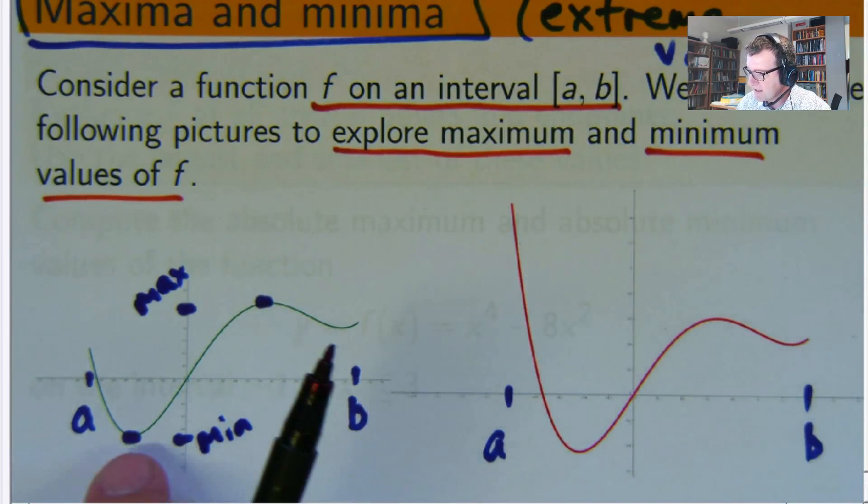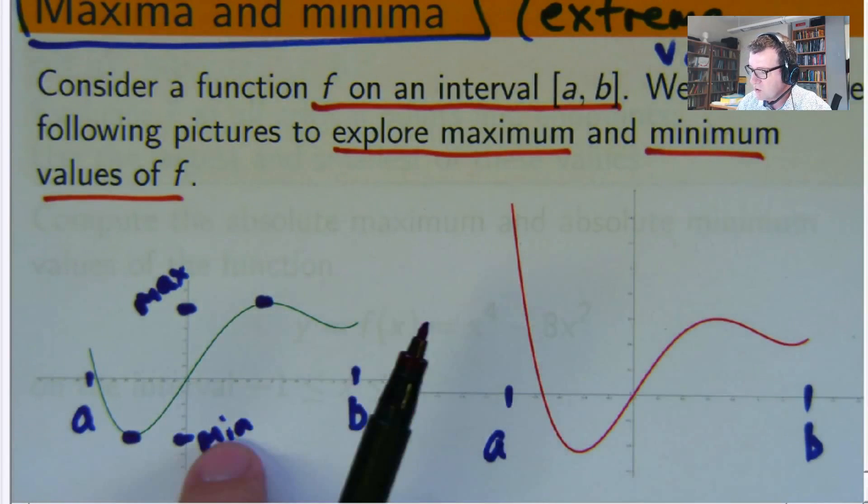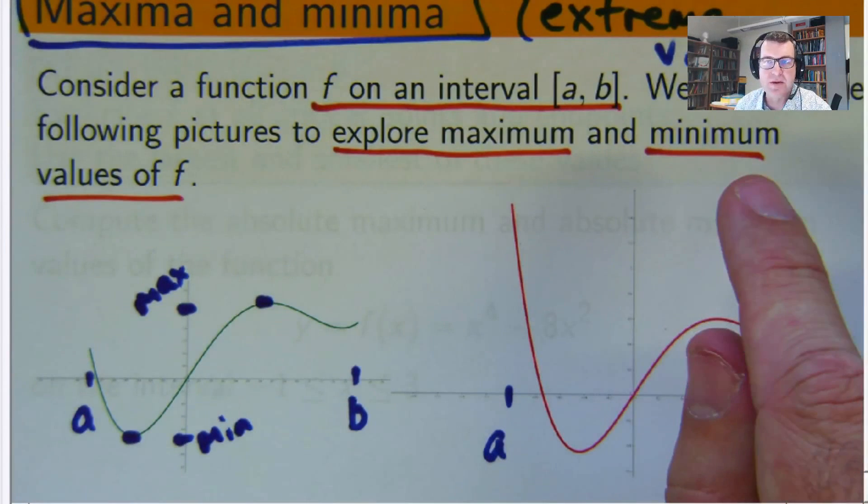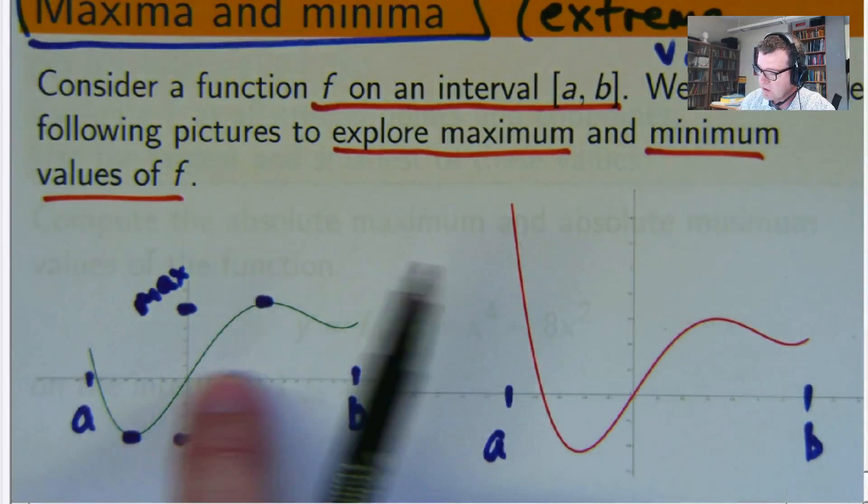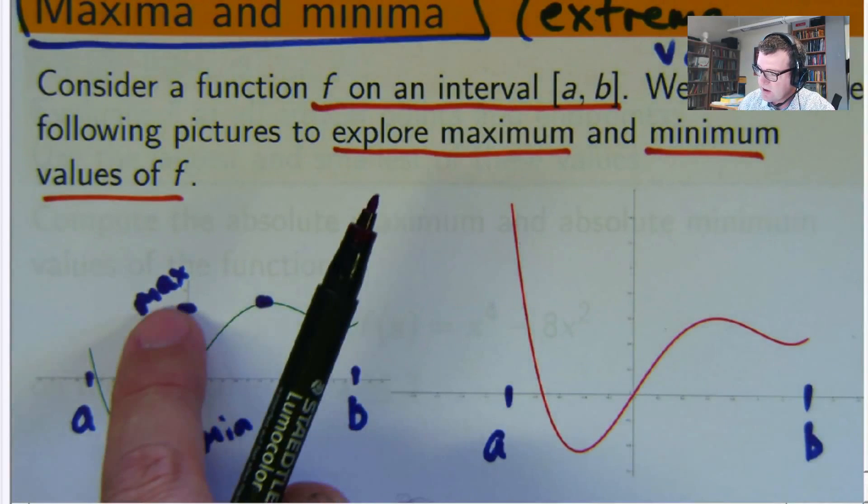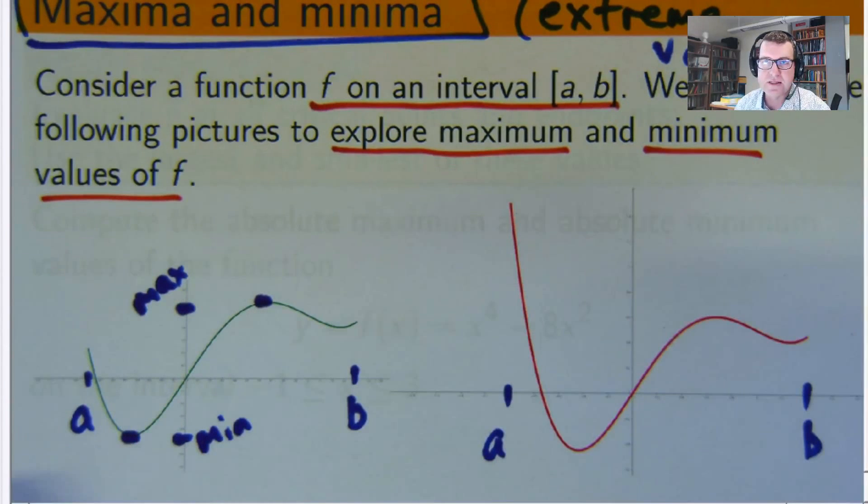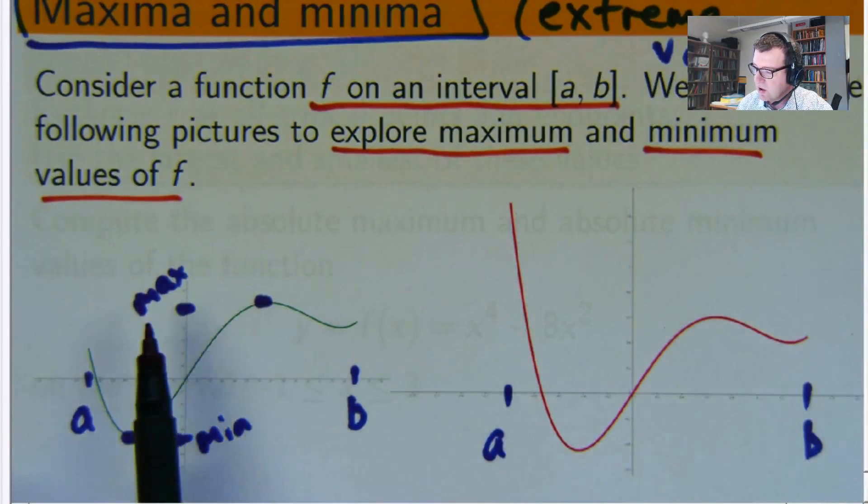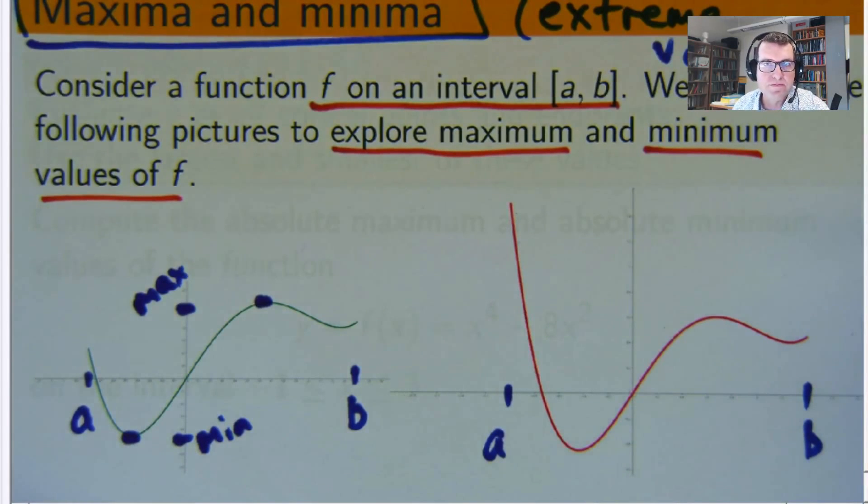In particular, because this is the lowest value on the whole interval, we would call this a global minimum. When we talk about the globe here, we're talking about this whole interval. Because this is the highest value or the highest point that the graph reaches on this interval, we would talk about this being a global maximum.